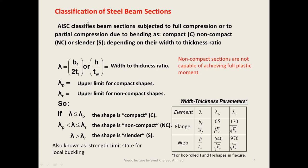AISC has classified steel beam sections into three categories — compact, non-compact, or slender — depending on their width-to-thickness ratios. For the flange this is bf divided by 2tf, and for the web it is h divided by tw. Lambda is the width-to-thickness ratio. Compact sections give full plastic moment capacity; non-compact sections cannot achieve full plastic moment capacity. Lambda_p is the upper limit for compact shapes, and lambda_r is the upper limit for non-compact shapes, as shown in the table with values for flange and web lambda.